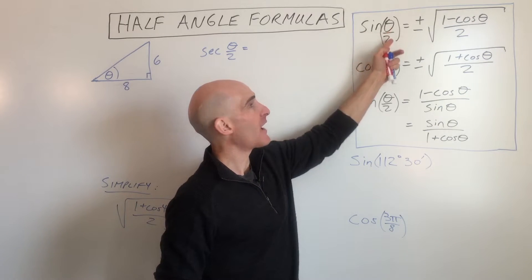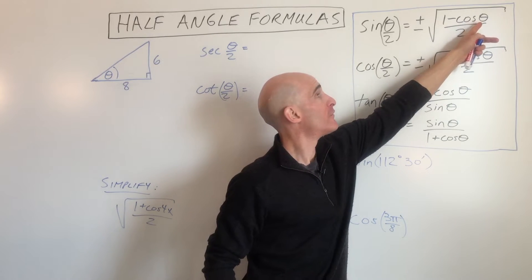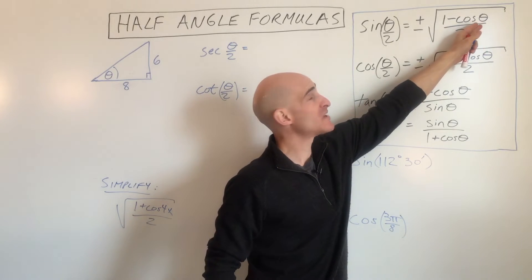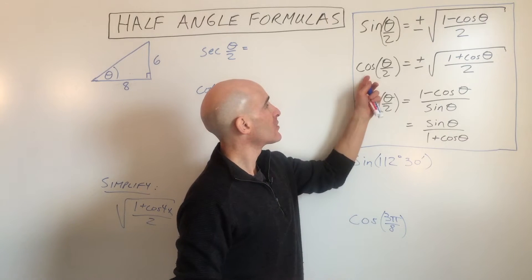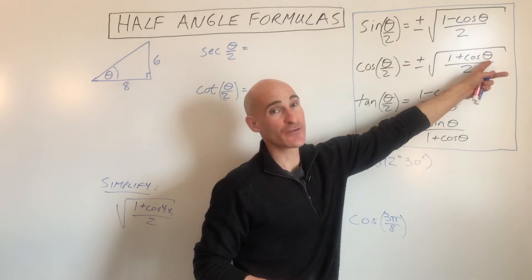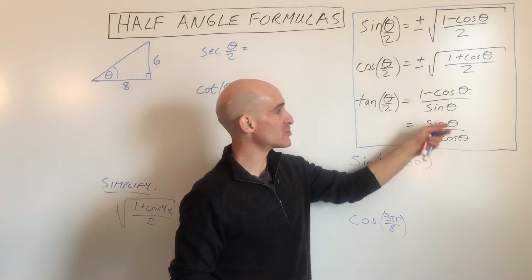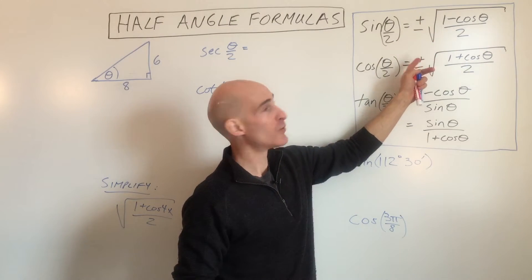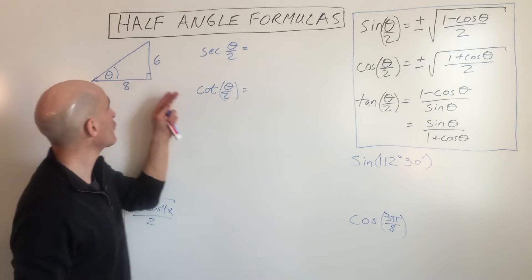If you want to find the sine of half of an angle, you can substitute the cosine of the full angle into the half-angle formula. We're going to be using the unit circle with angles we're familiar with — like 30, 45, 60, 90 and multiples of those. The same applies for cosine and tangent. Tangent has two different formats you can use. There's a question about the plus or minus sign — we'll talk about that in a minute.